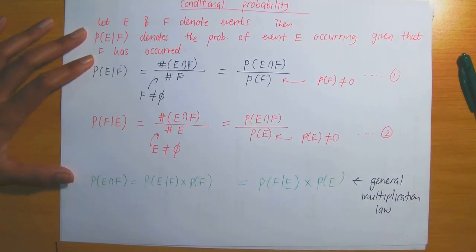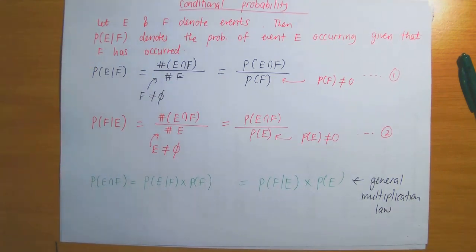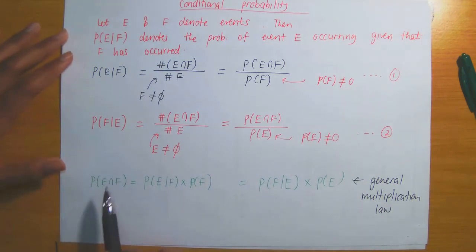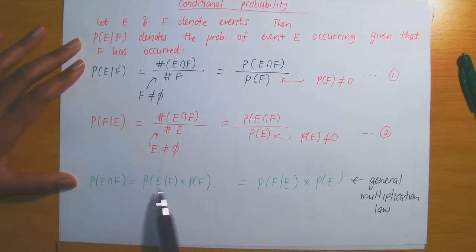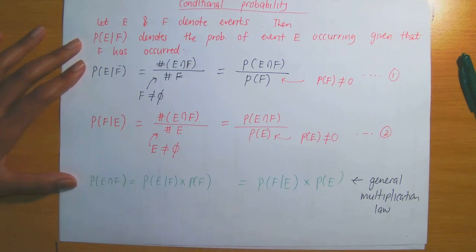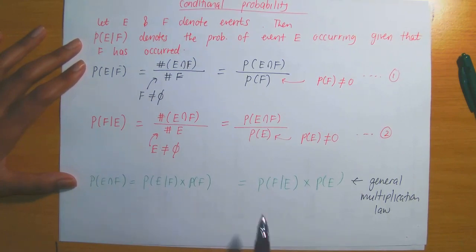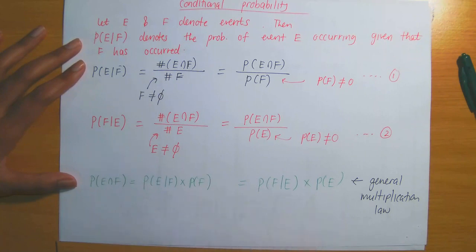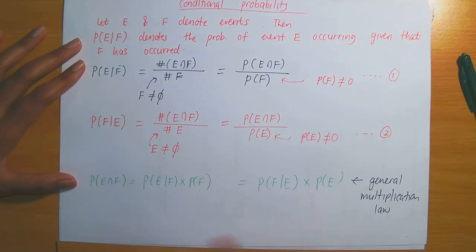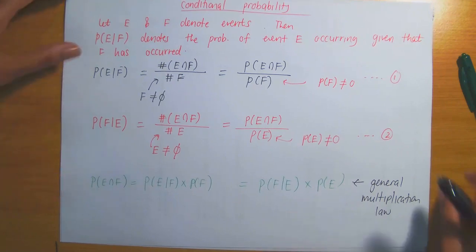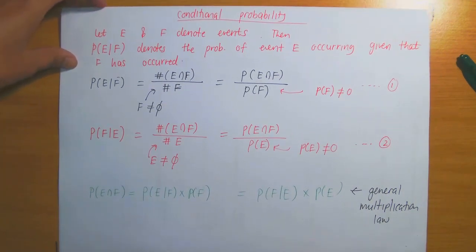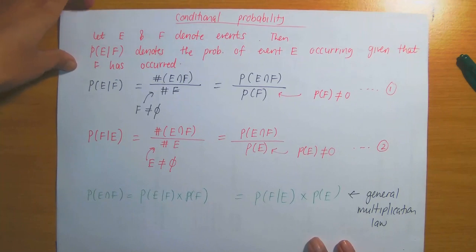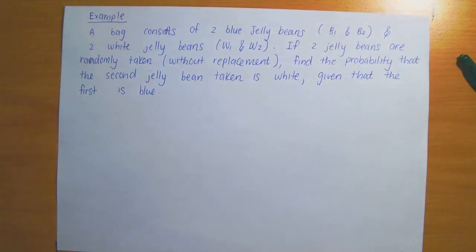So if you ever need to find the probability of two events occurring together, you may use conditional probability and multiply by the probability of the event that has already occurred. Keep in mind all of these formulas. Now let's go through an example.